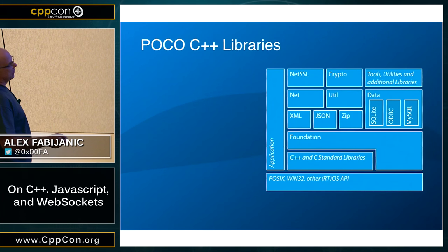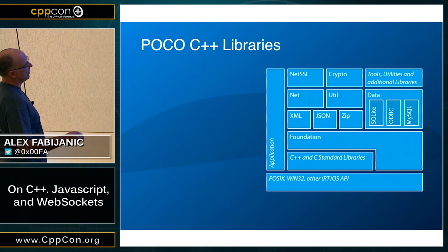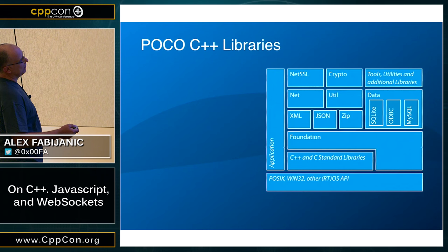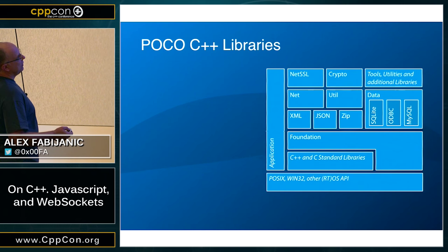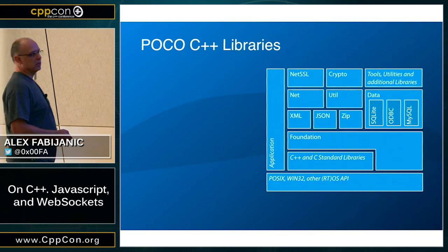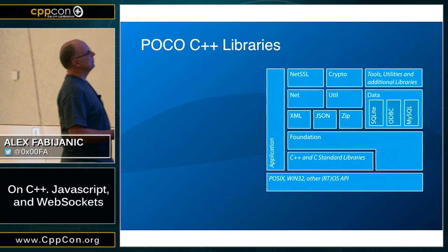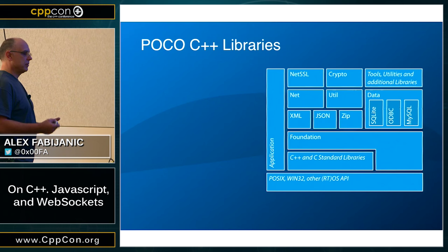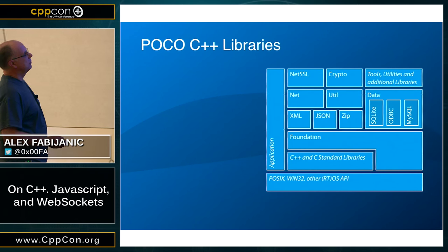This is what the architecture looks like. At the bottom you have your platform, then C/C++ standard libraries, and then there's a POCO foundation library. Where standard libraries are not sufficient, we go directly to the platform. On top of that we have various libraries like XML, JSON, ZIP, and so forth. There's a data set of libraries with new things coming, like PostgreSQL support. Then there's a utility library with application configuration and similar utilities, a net library with all kinds of net-related things, and NetSSL which gives you secure networking in conjunction with the crypto library. There are other libraries like MongoDB that are on GitHub and used in production.